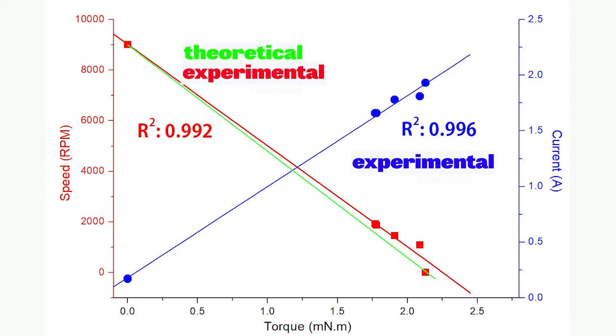Now, we have got the R square of speed versus torque, 0.992, and the current versus torque, 0.996, which is a very good result for our experiment. It means our experiment is reliable and trustable.